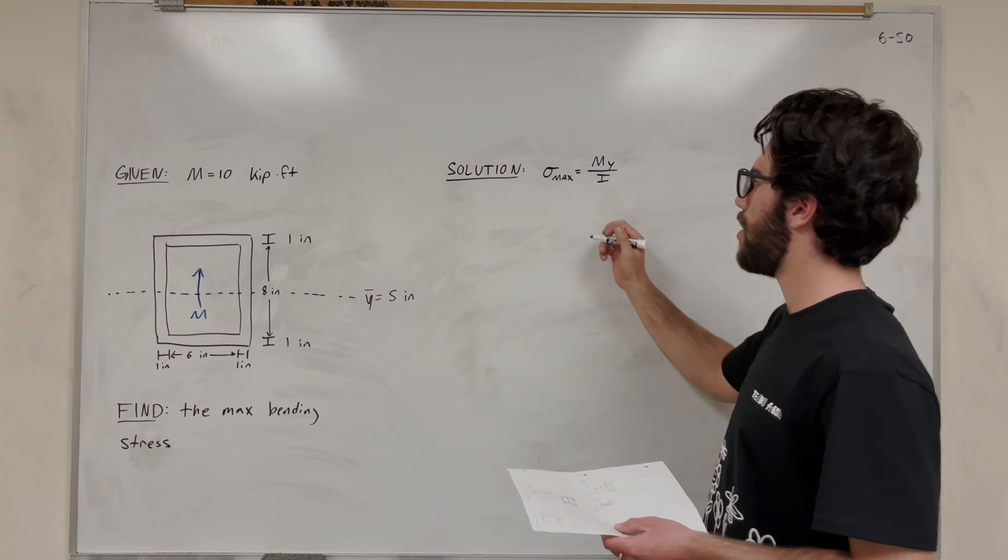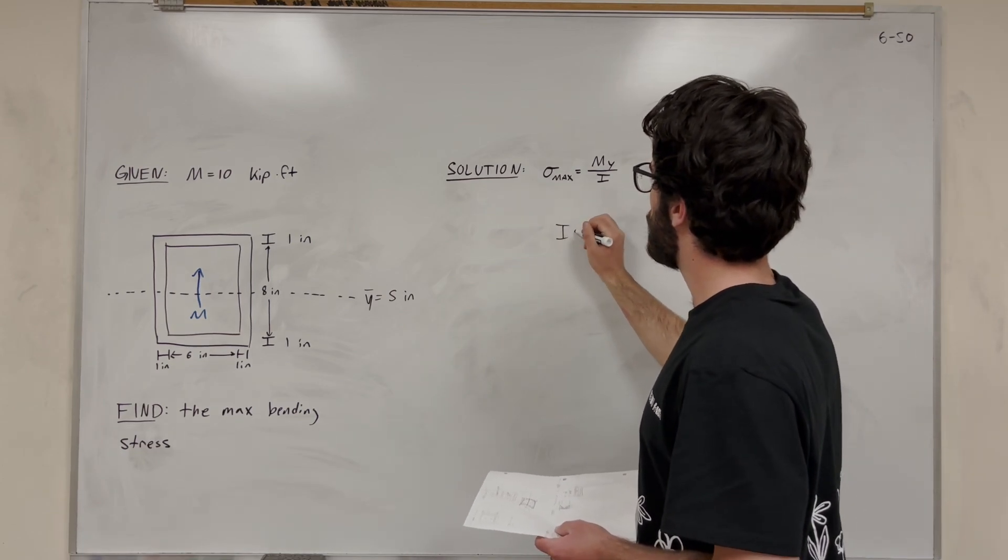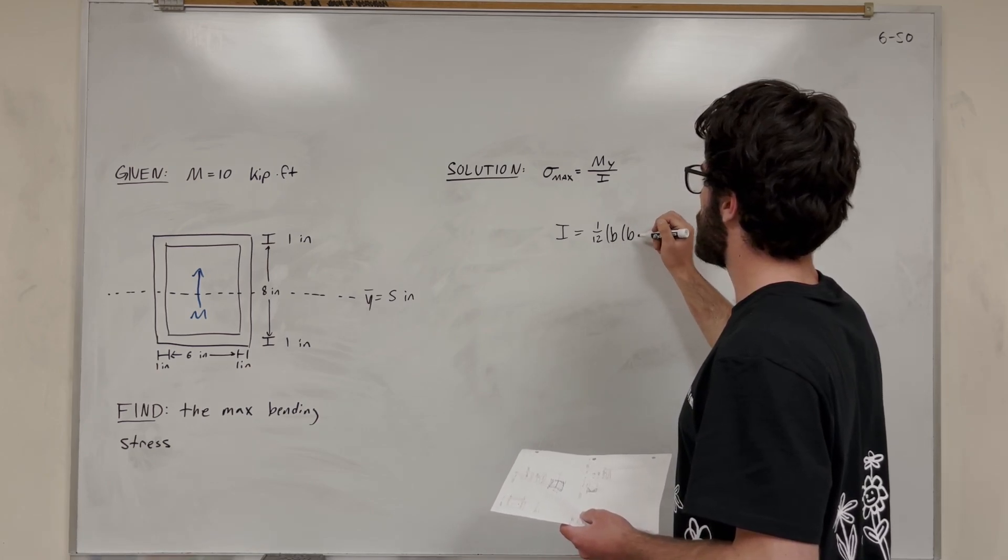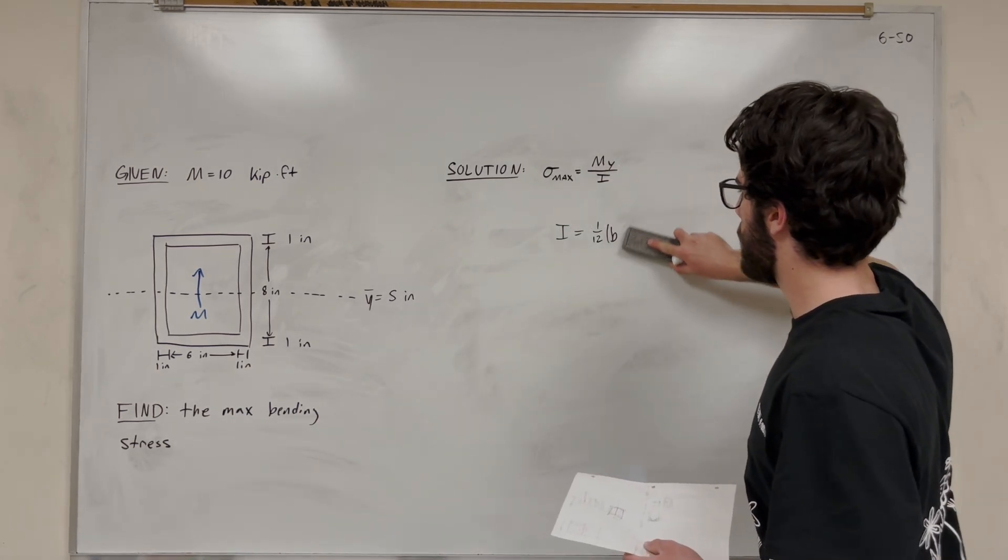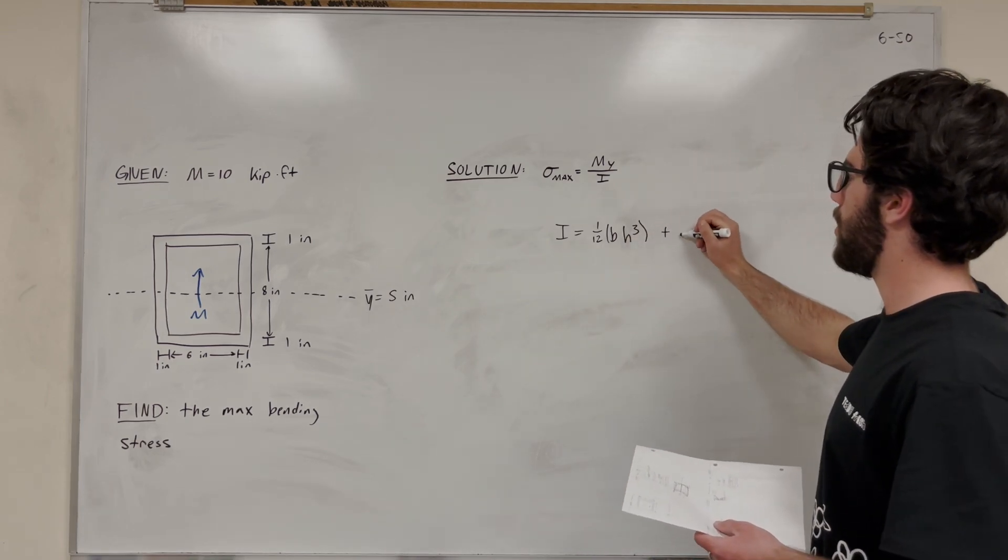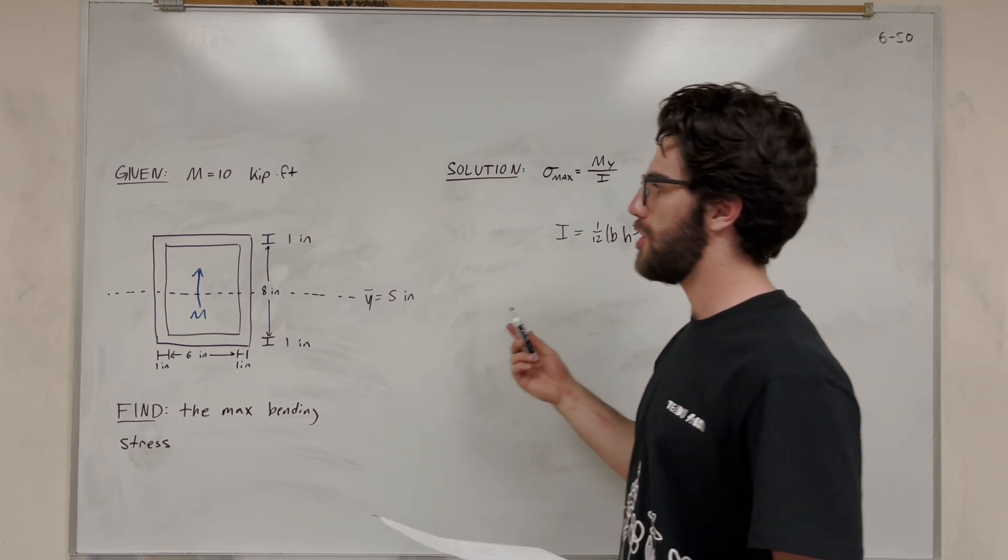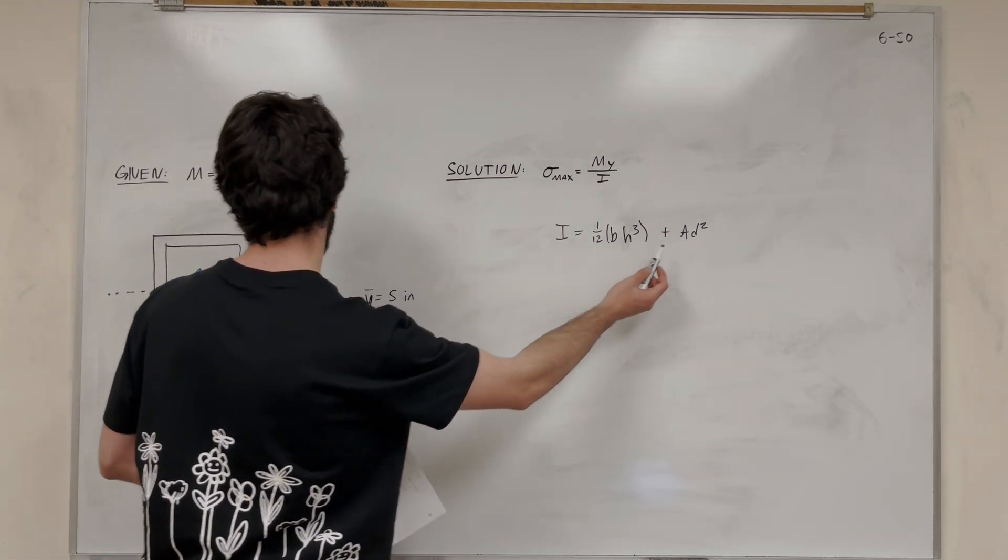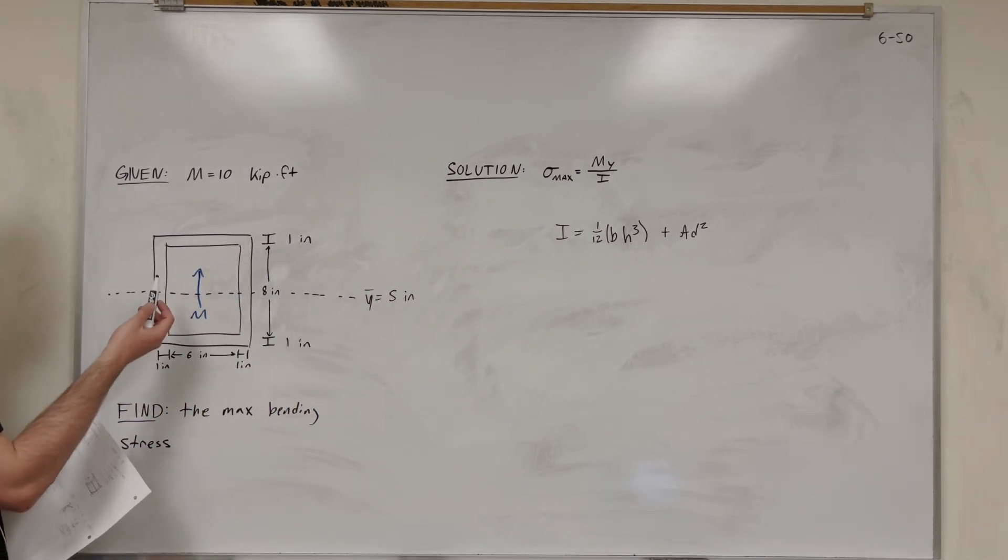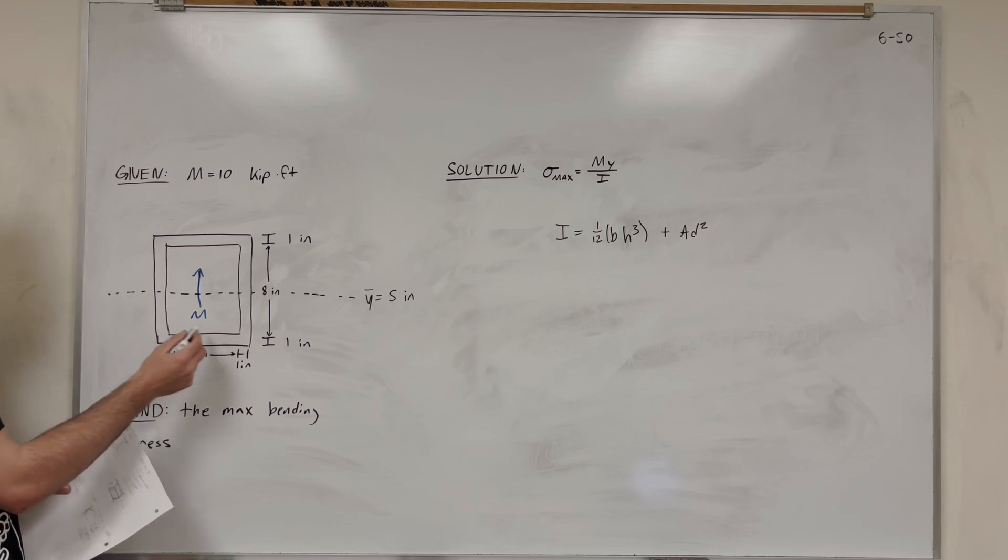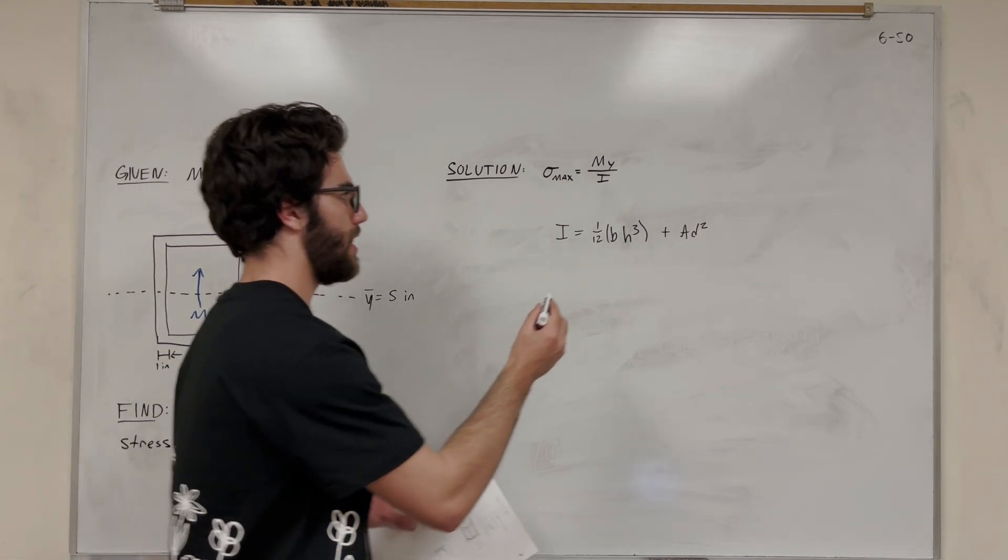So then all we have to do is find the moment of inertia. So moment of inertia for a rectangle is 1/12 base height to the third. If we're using parallel axis theorem, there's usually going to be plus area distance squared. That being said, if we choose the right shapes, we can basically make it so it's not necessary for us to use distance squared because everything already lies on the central axis. And how can we do that? Well, we can take this big rectangle, the one that's 8 inch base and 10 inch height, and we can subtract it from the moment of inertia of the inner rectangle, 6 and 8.